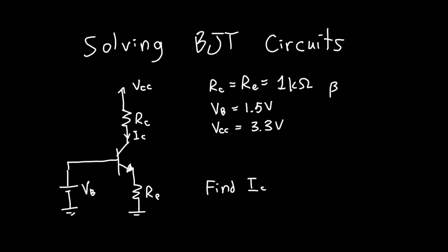We're also going to assume that beta is much greater than 1, so we're going to essentially neglect any base current. That's the same as saying that the base current is equal to 0. So how do we actually solve this circuit? We need one more piece of information.